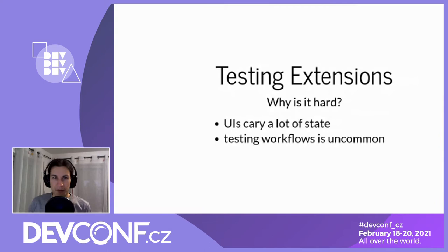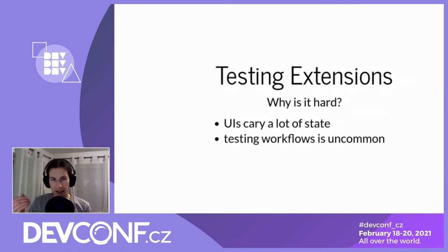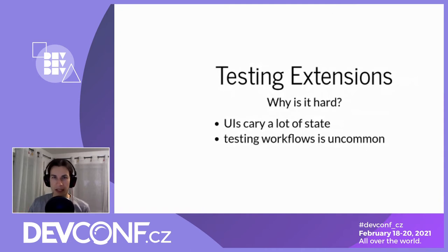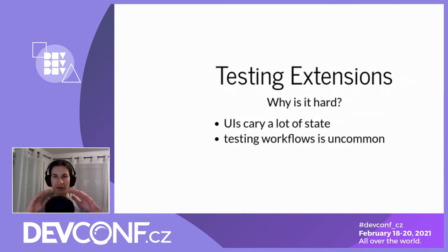Also, if you've created an extension, usually the important part is that you have certain workflows - imagine a Git extension, or one that connects to Kubernetes or OpenShift. You want a workflow to be functional. Unit tests are really only good for testing individual chunks of code; they're not good at testing workflows because a workflow is a combination of a whole ton of things, but a unit test tests just one tiny bit.